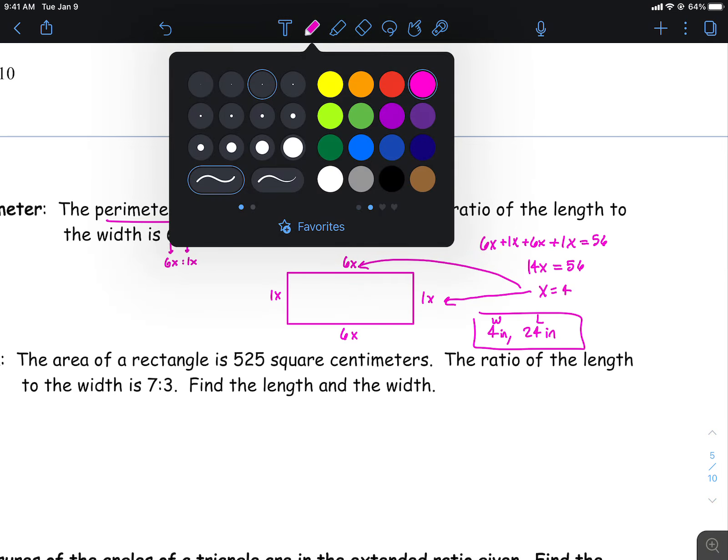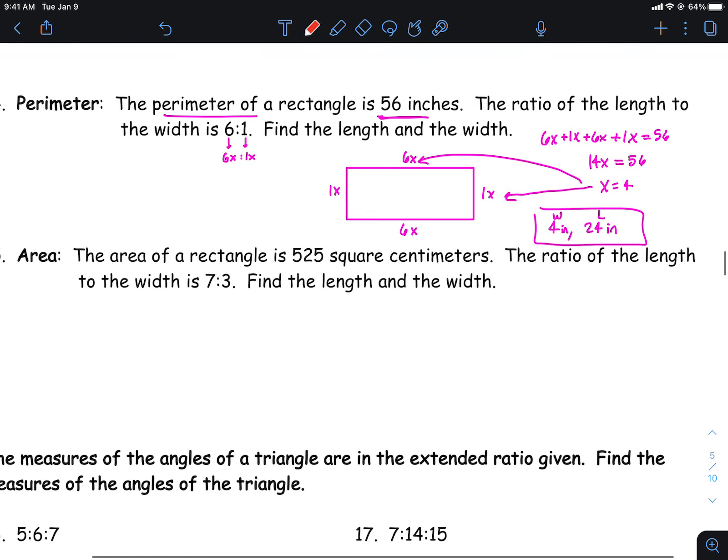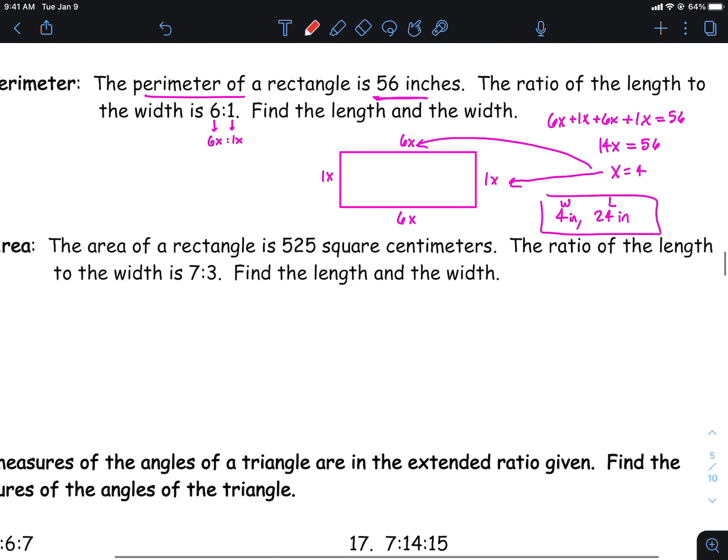You can do the same exact thing here with area. It's just a slightly different approach. On this one here, it starts the same. You're going to go 7x to 3x. You're going to draw yourself a rectangle. Then 7x, 3x. I guess you can go ahead and put your other 7x and 3x. The difference here is the area is 525.